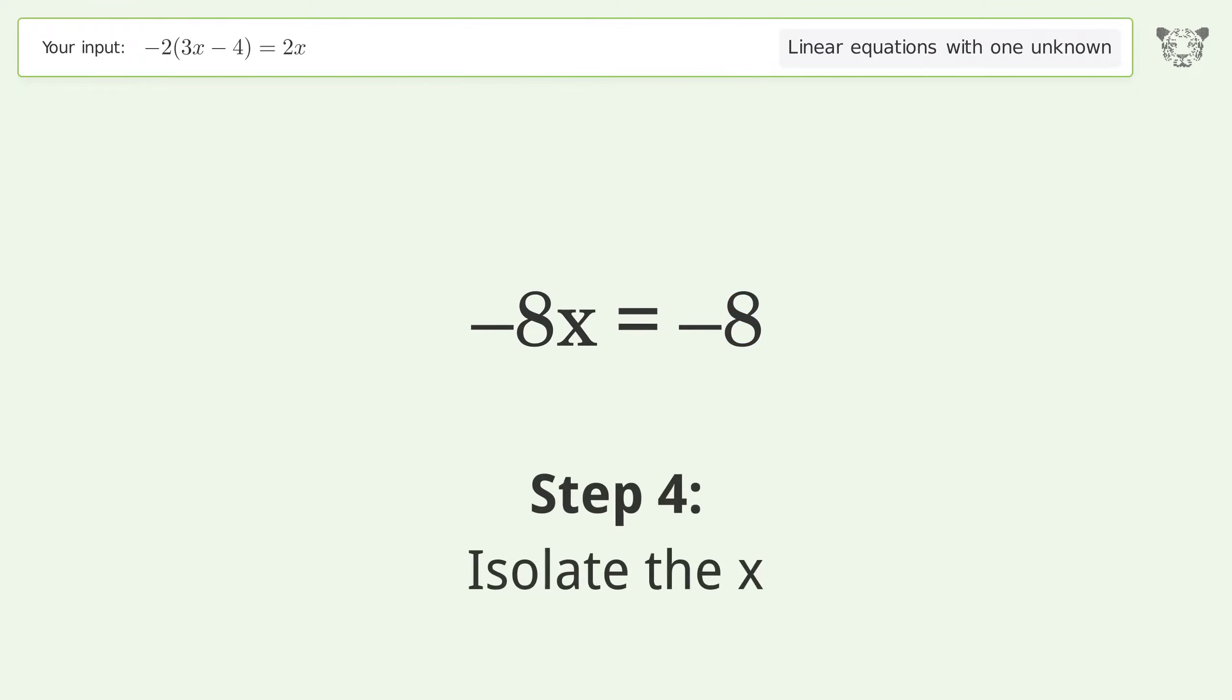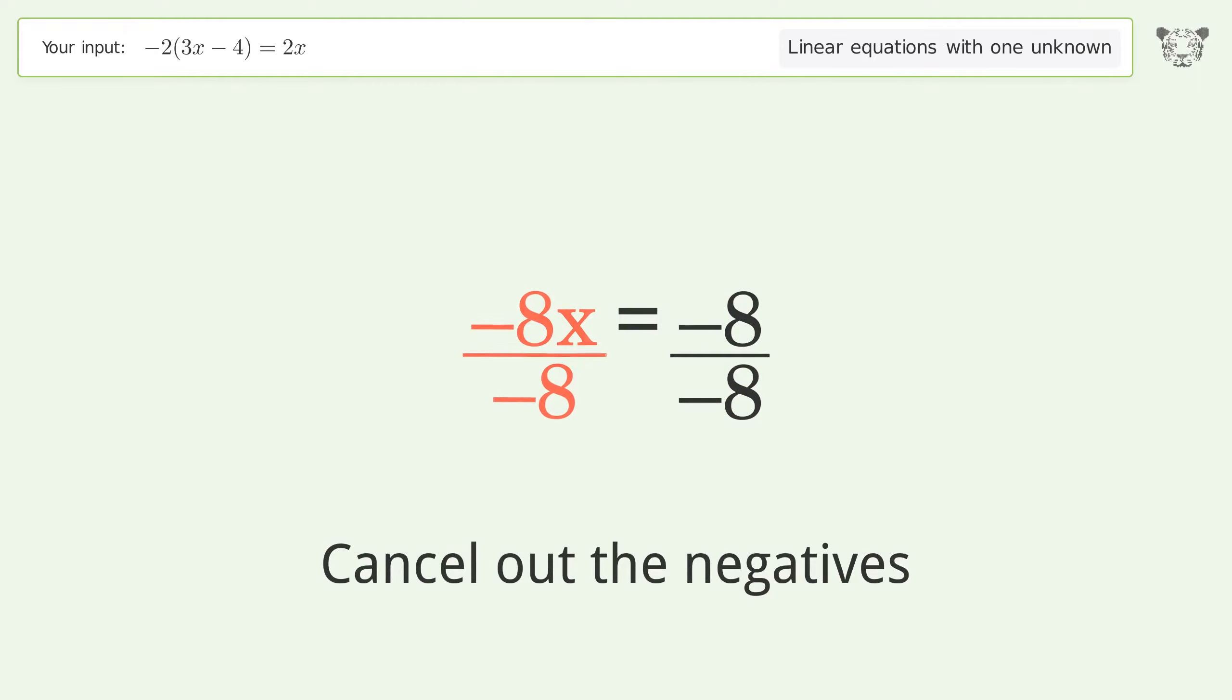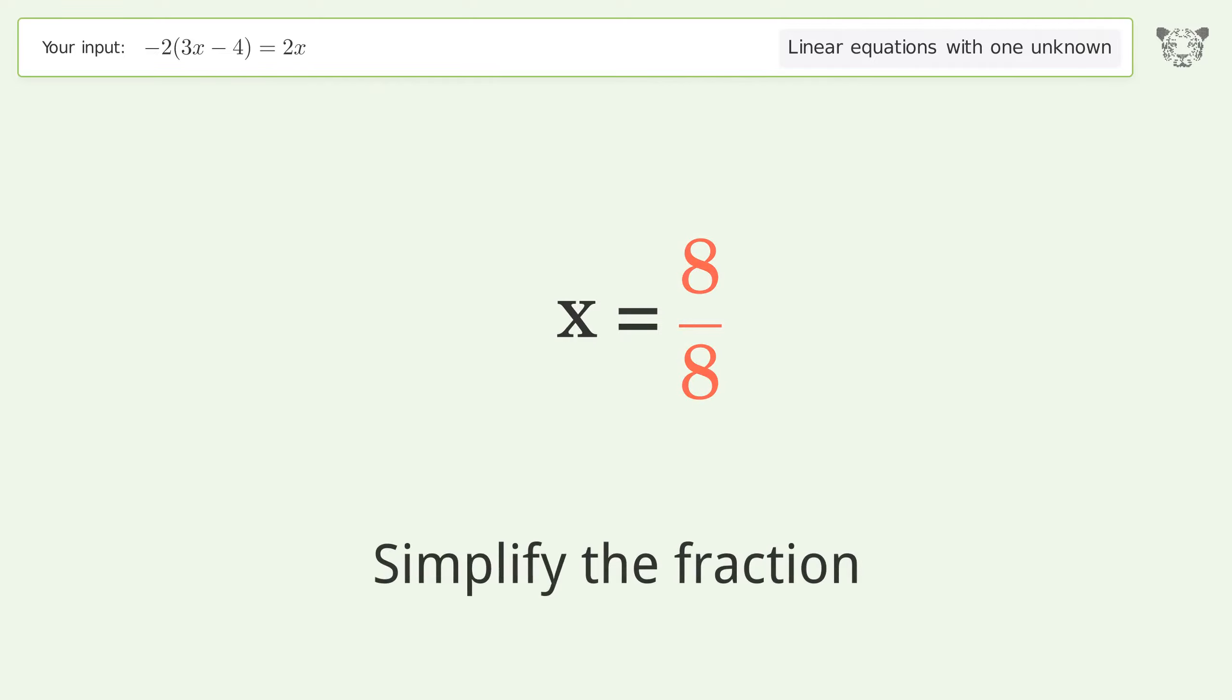Isolate the x. Divide both sides by negative 8. Cancel out the negatives. Simplify the fraction.